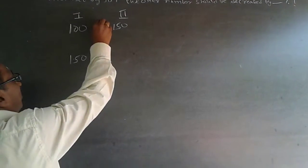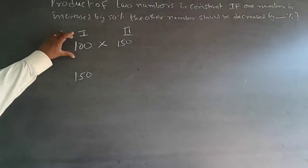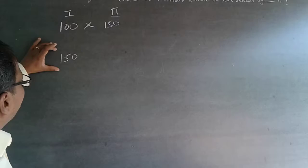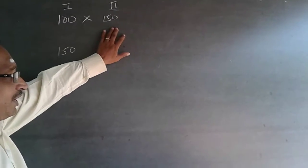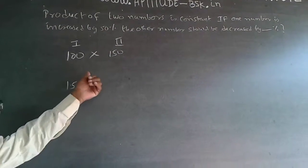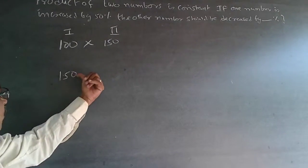Since the product has to be constant, my first number is 100. When I increase it by 50%, the second number becomes 150.